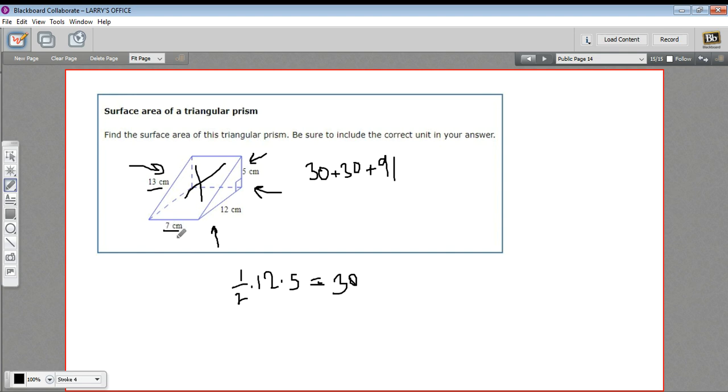Let's do the underneath. So we've got this one is 12 times 7, and that is 84. And then the back here, it's 5 by 7, so that's 35.